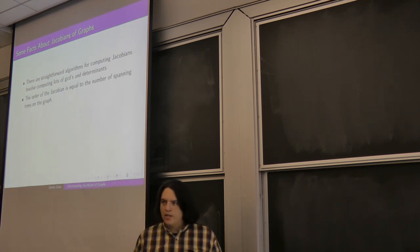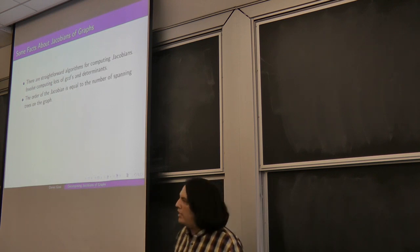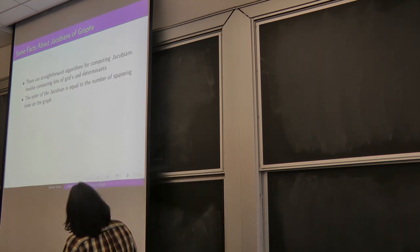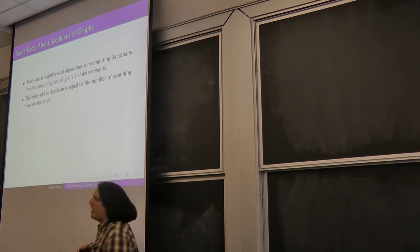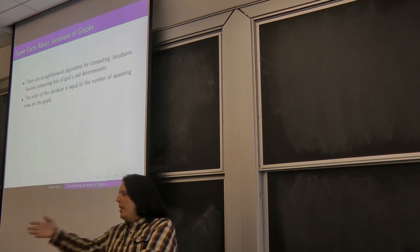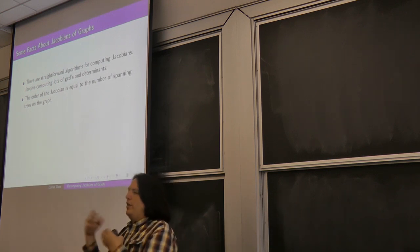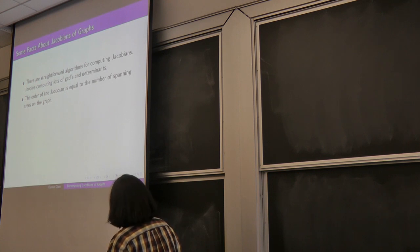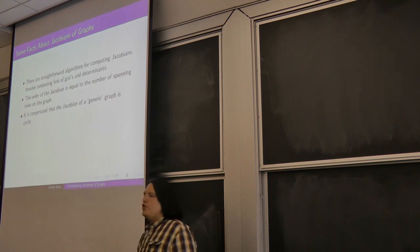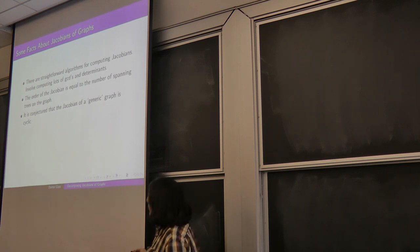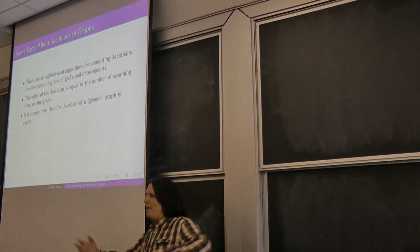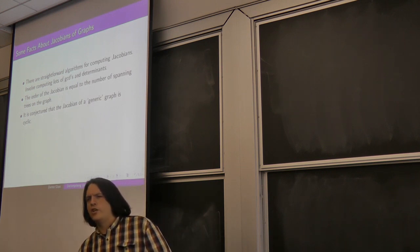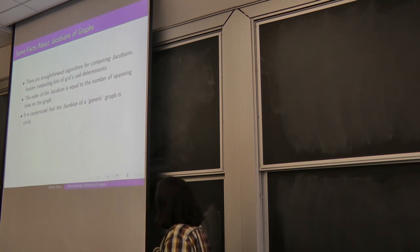A couple of other facts about Jacobians: the order of the Jacobian of a graph equals the number of spanning trees on the graph, which also equals the determinant of the reduced Laplacian. So if you can count spanning trees, you know the order of the Jacobian, limiting your options. It's conjectured — I believe due to Biggs — that the Jacobian of a generic graph is cyclic, with some partial results along the way.